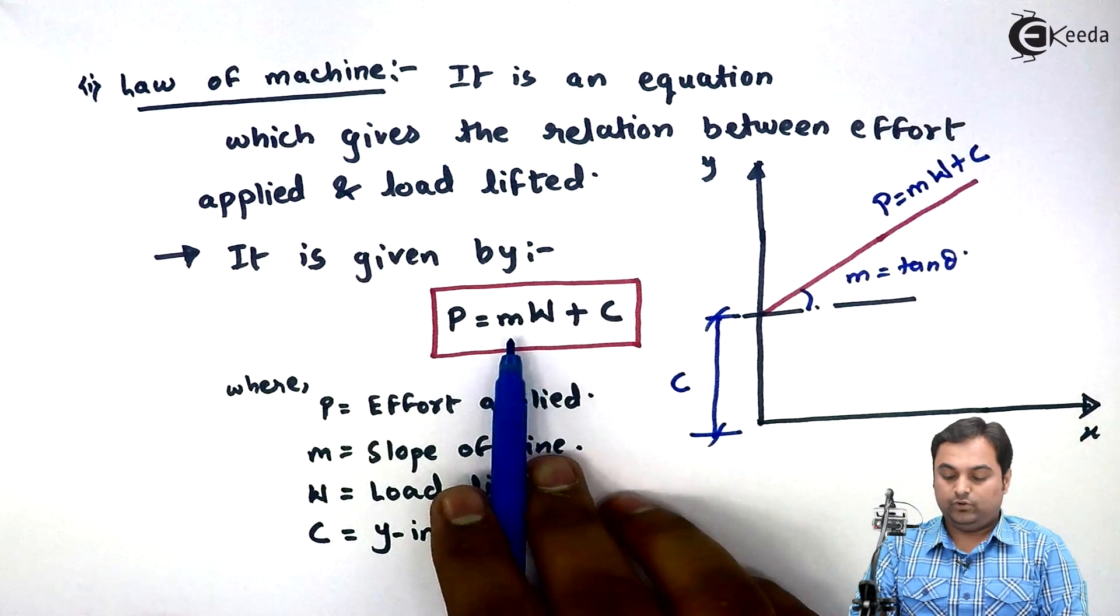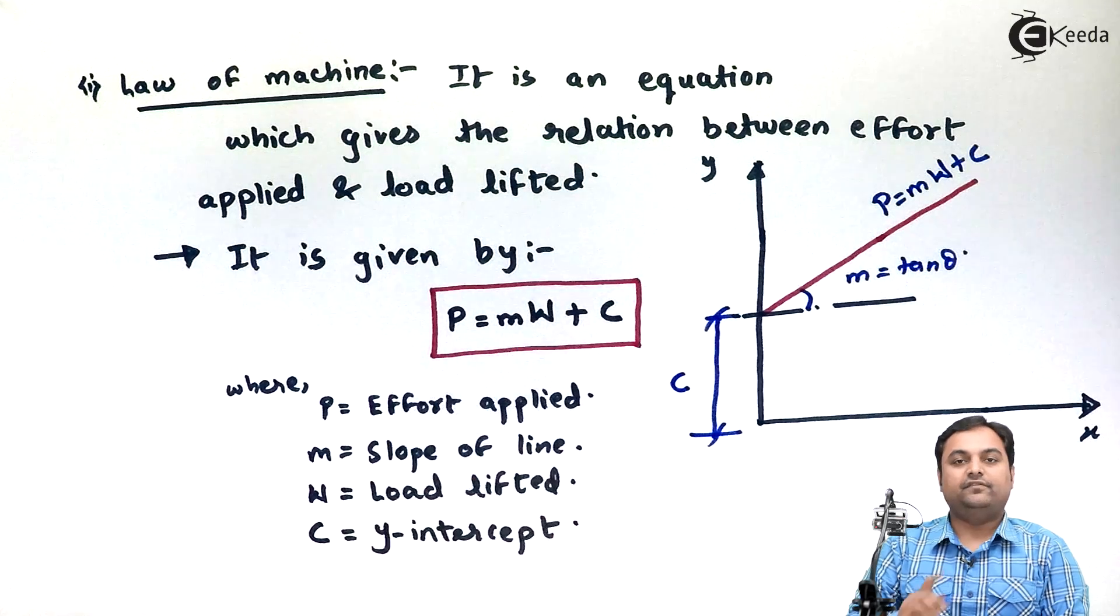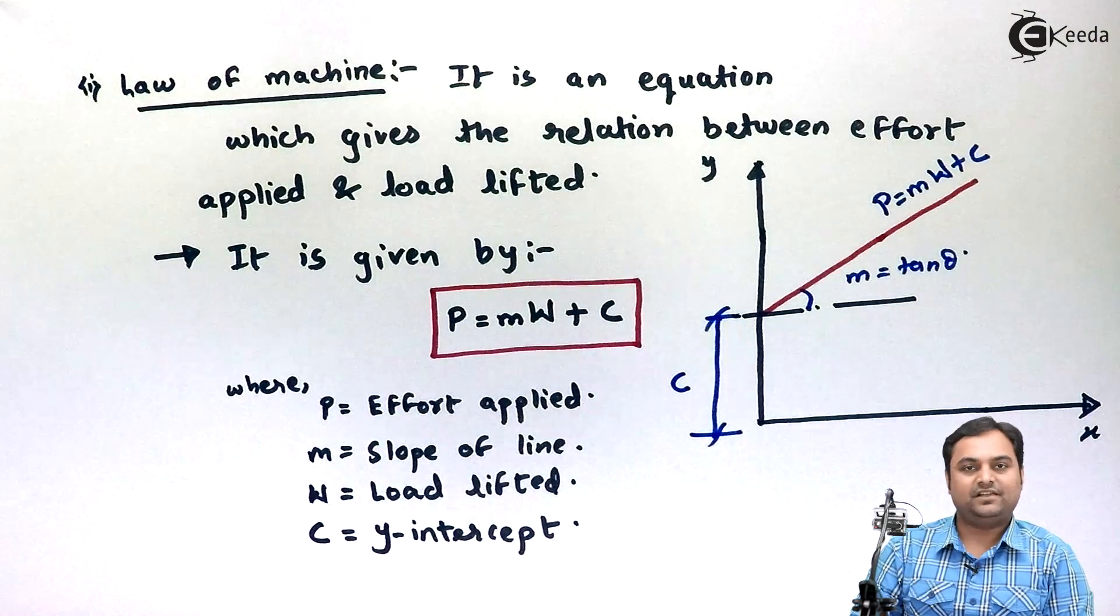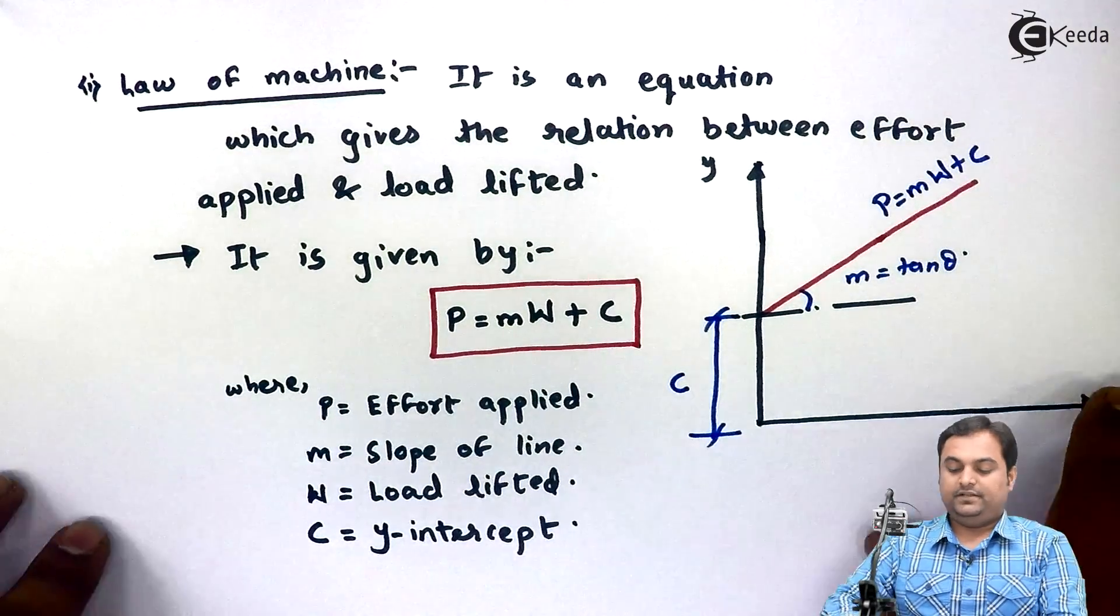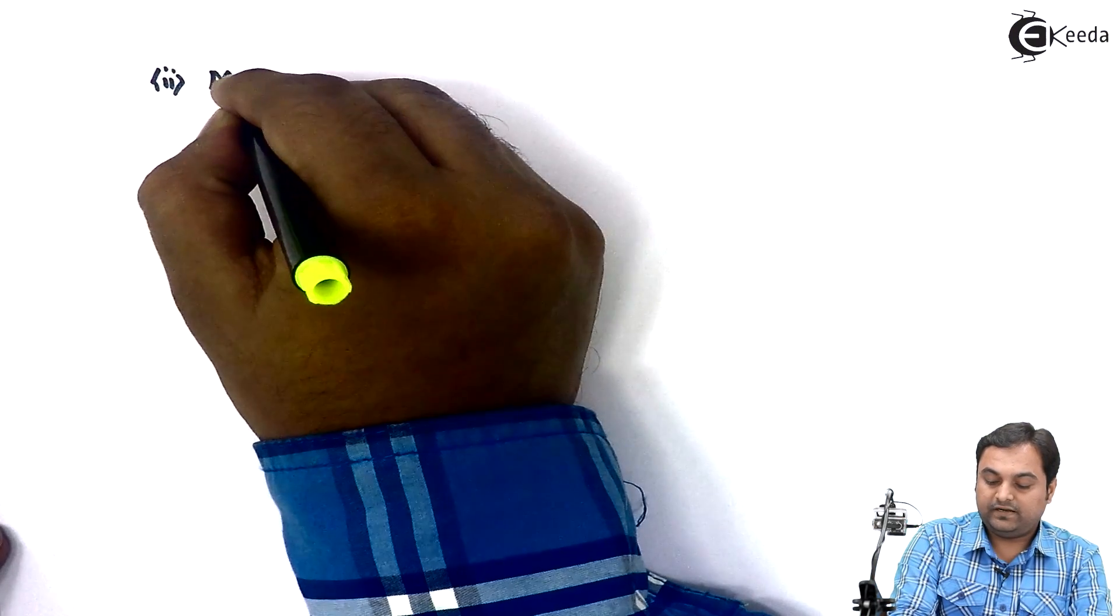So as we can see from law of machine, if we know M and C values, out of load and effort if any one value is given the other value can be calculated. The next definition is maximum mechanical advantage.